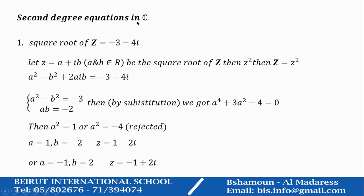Second degree equation in C. Square root of Z equals minus 3 minus 4i. For example, I have a complex number. I'd like to find its square root. The square root of Z is small z, which is a complex number of the algebraic form A plus IB, where A and B belong to R.